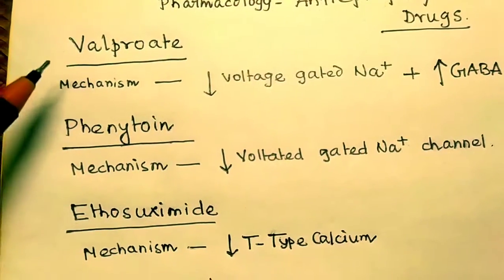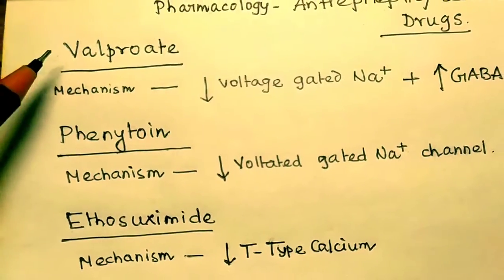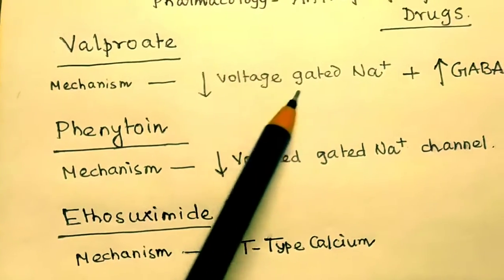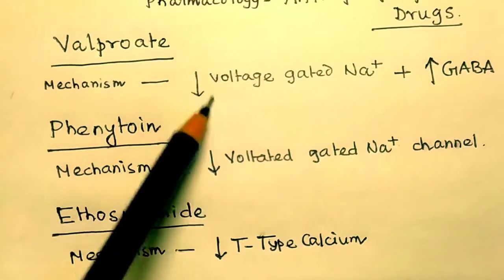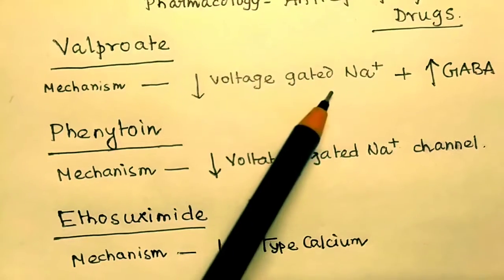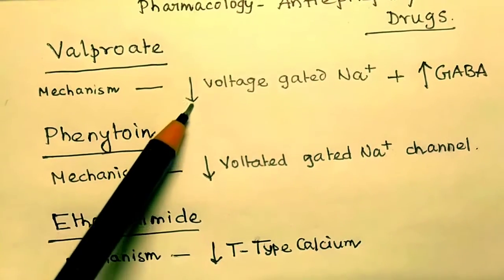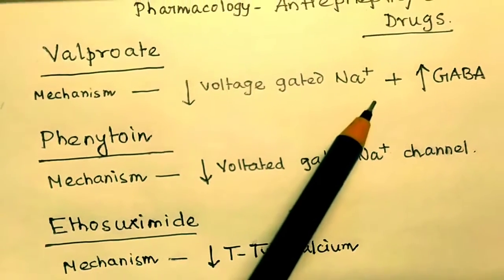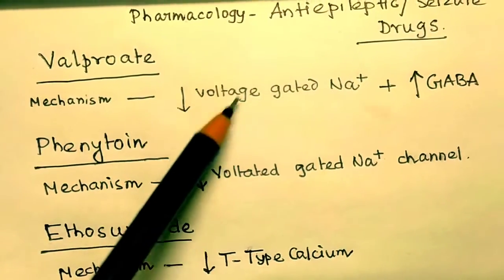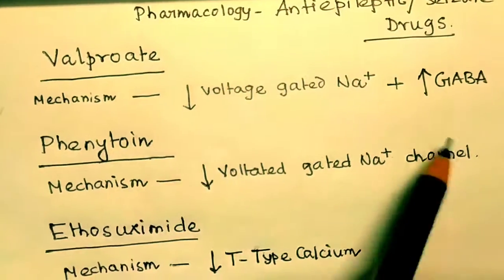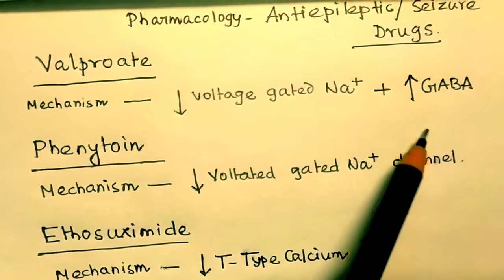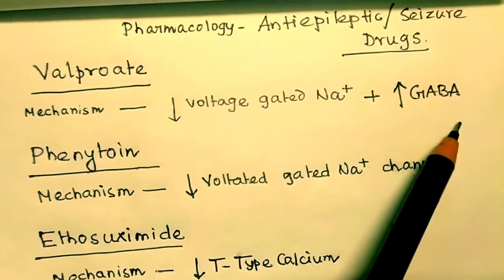The first drug we will learn is valproate. The mechanism of valproate is that the voltage-gated sodium channel activity will be decreased. This sodium channel increases the activity of the brain, so decreasing it will help reduce epilepsy. Valproate also increases GABA, because GABA is inhibitory in action, so increased GABA will help reduce seizures.